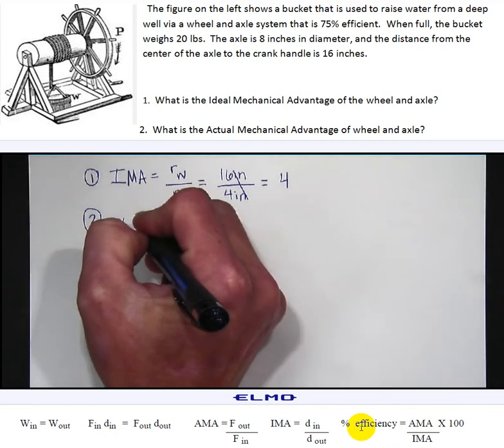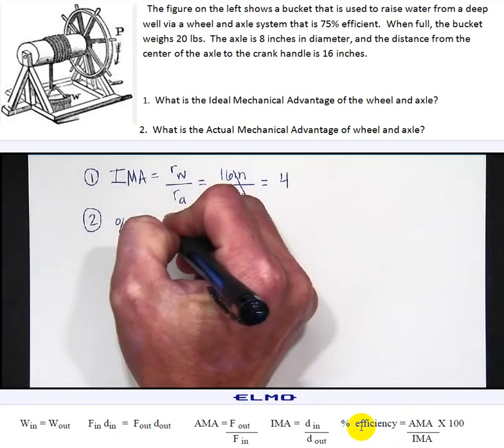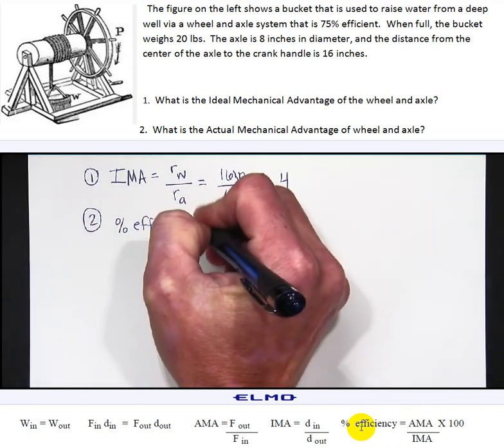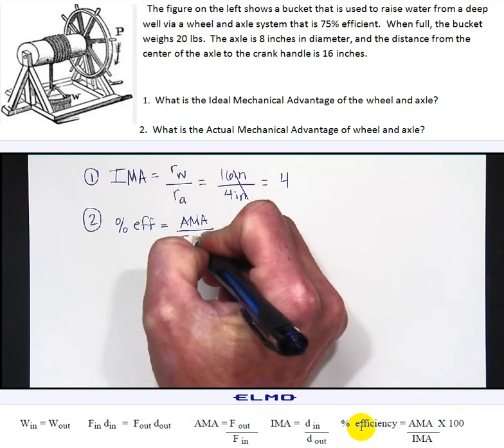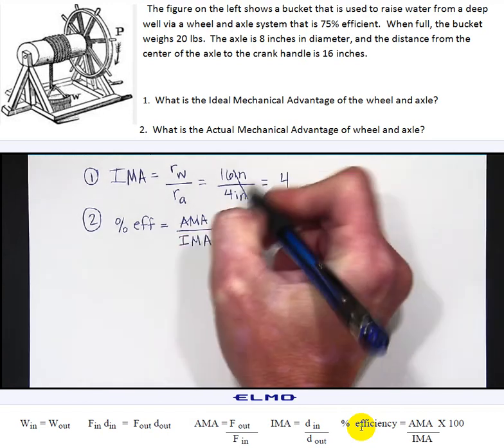So percent efficiency equals the actual mechanical advantage divided by the ideal mechanical advantage times 100.